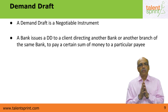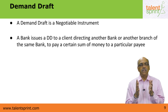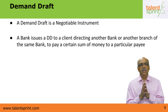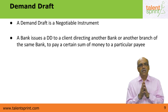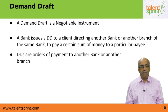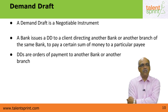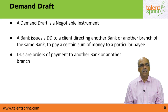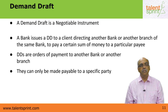For example, the Banjara Hills branch of Punjab National Bank in Hyderabad could issue a DD favouring the Connaught Place branch of Punjab National Bank in Delhi, saying please pay Mr. ABC the sum of Rs. 10,000 when it is presented. A DD is an order of payment to another branch. An Indian Overseas Bank branch, for instance, cannot draw a demand draft on a branch of Vijaya Bank — demand drafts can only be drawn on their own branches and made payable to a specific party.